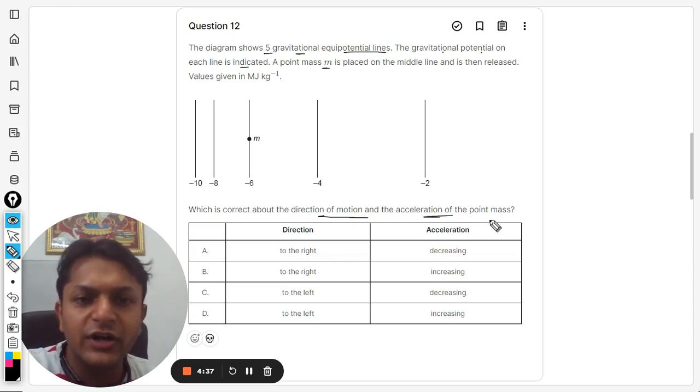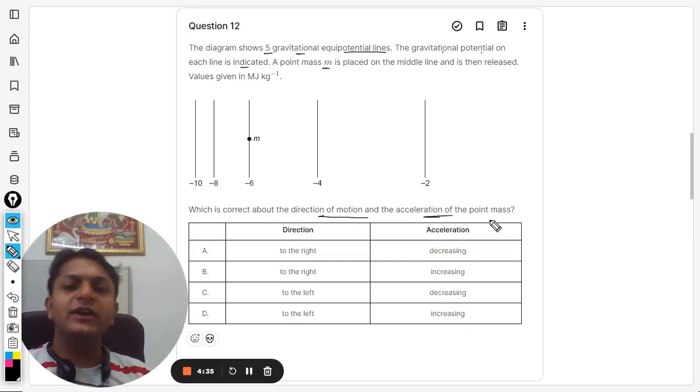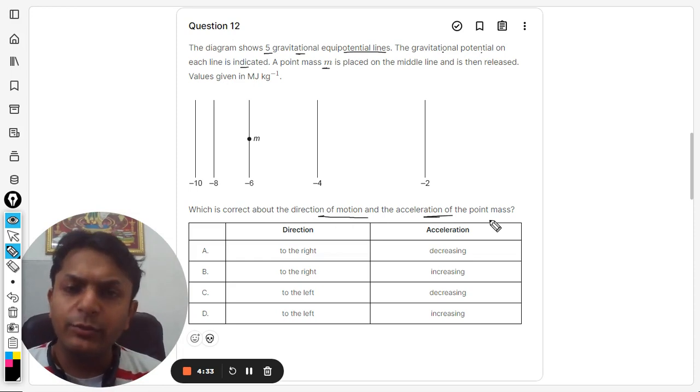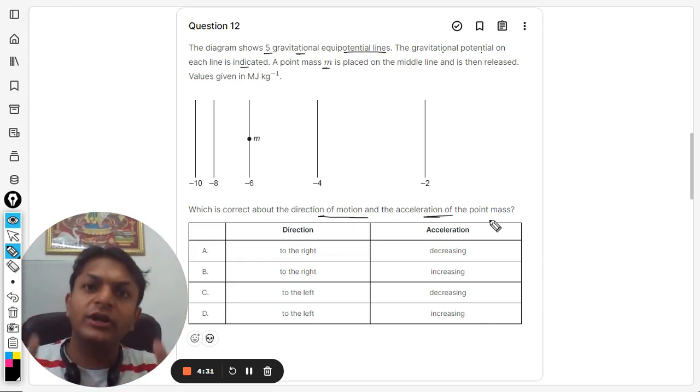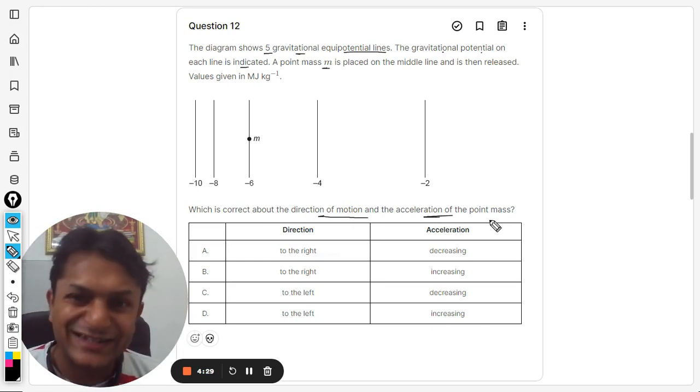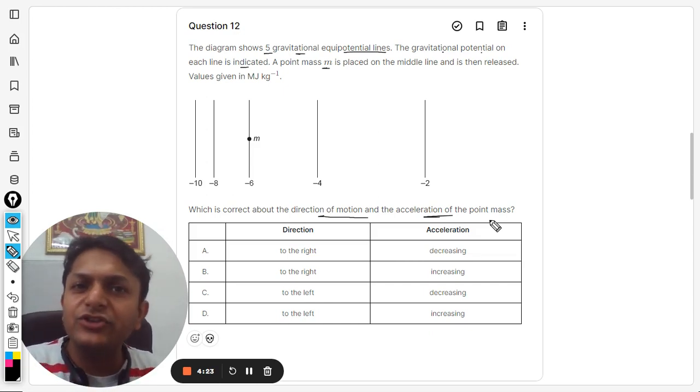Which is correct about the direction of motion and the acceleration of the point mass? We have to find where the body would be moving once you are releasing the body and it is free to move in the space. So as a thumb rule, we can always say that bodies travel from higher potential to the lower potential, always.